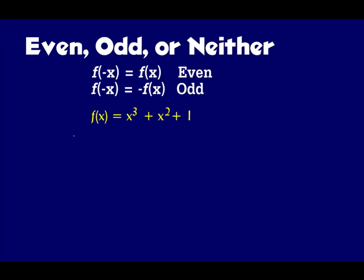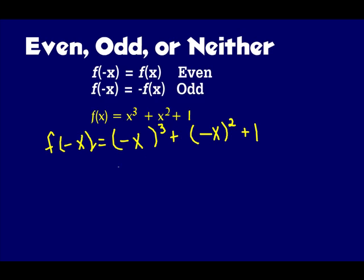Let's figure out if this one is even, odd, or neither. Put negative x in for all of the x's — I make parentheses where all the x's are, then substitute negative x. Negative x to the third is negative x to the third, plus negative x squared is x squared, plus 1. Now negative x to the third is the opposite of x to the third, but positive x squared is the same as positive x squared. So it's neither even nor odd — this one is a neither.